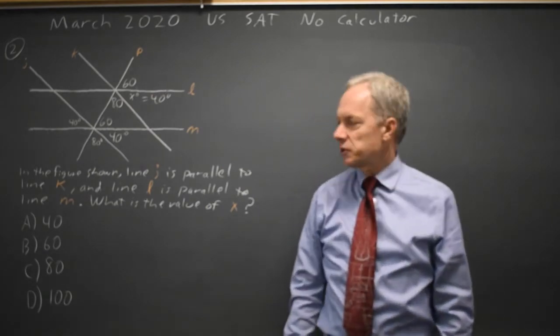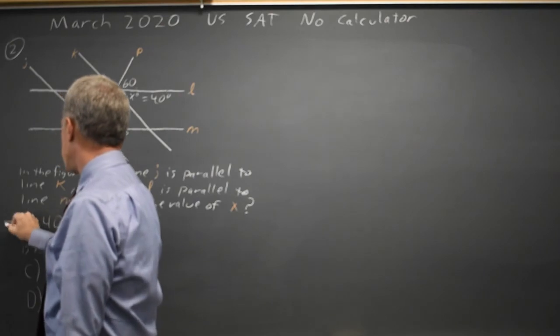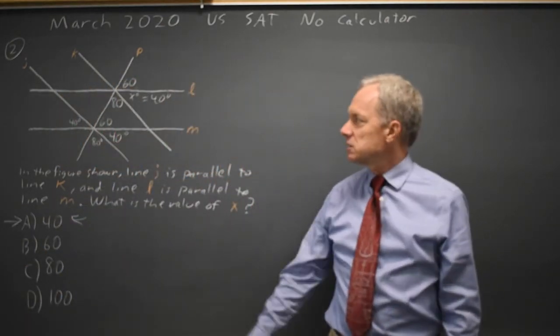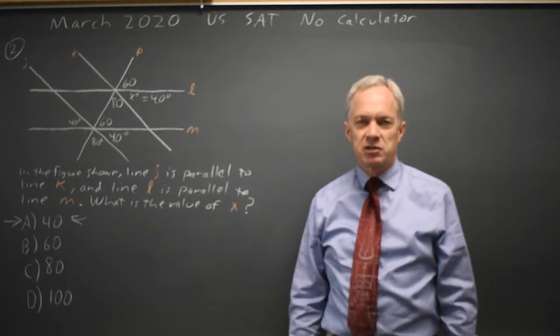There's several ways of working that out, but the correct answer will be choice A, because L and M, J and K are pairs of parallel lines.